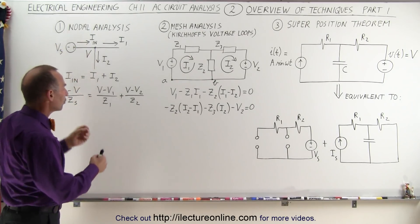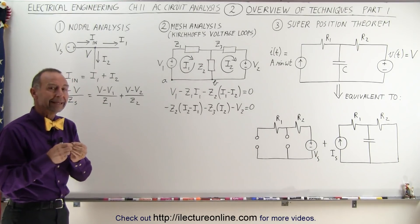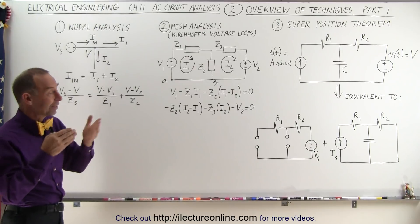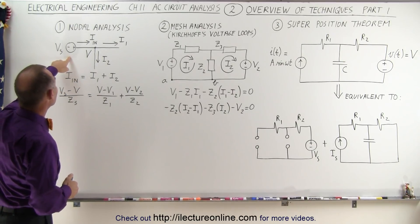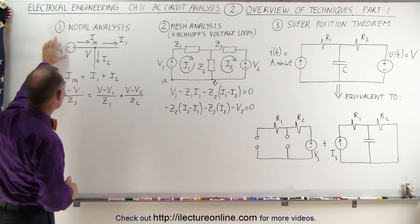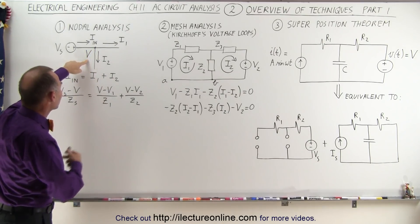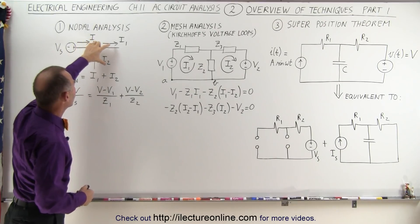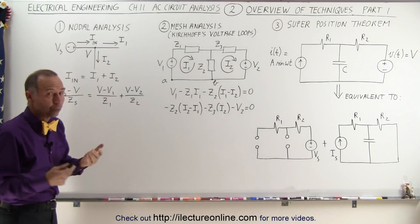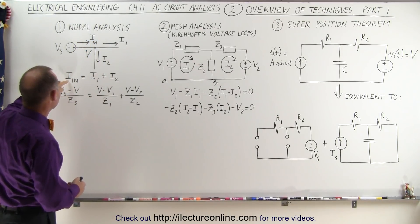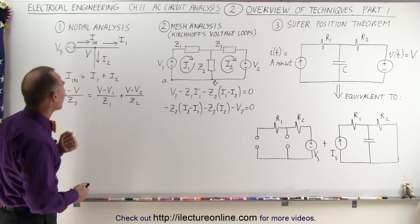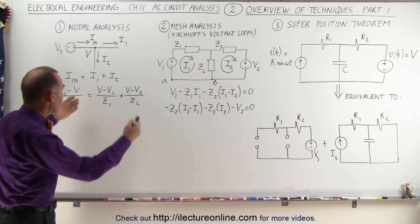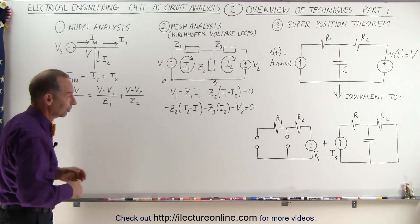In Nodal Analysis, we're using Kirchhoff's Current Rule that says all the currents entering a node equals all the currents leaving a node. Here we have an example with a voltage source and a node at a particular voltage V. We have a current going into the node and two currents leaving the node. According to the rule, the current into the node equals the two currents leaving. There could be more currents leaving or entering. You'll never have a situation where you have currents entering and no currents leaving.